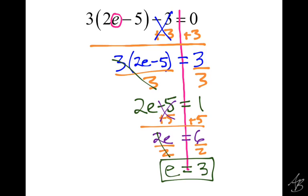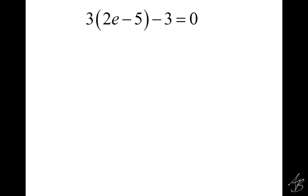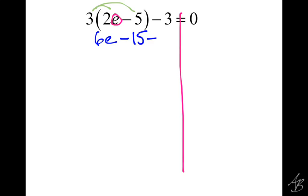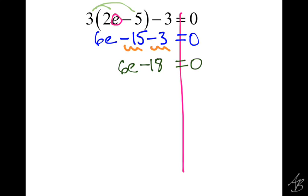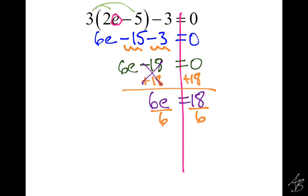I do want to go through the other way quickly, just to show you we get the same answer. If we distribute first, we distribute the 3: 3 times 2E is 6E, and 3 times negative 5 is negative 15. Then we bring down our minus 3 equals 0. Combining like terms, negative 15 and negative 3 combine to get negative 18, so we have 6E minus 18 equals 0. We add 18, leaving 6E equals 18, then divide by 6, and we get E equals 3. Both ways take four steps and both give the right answer.